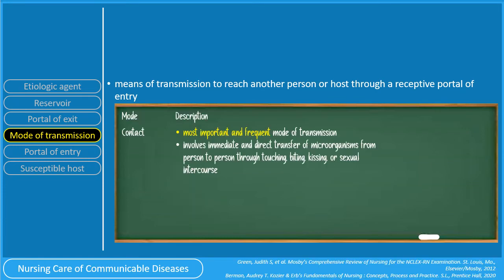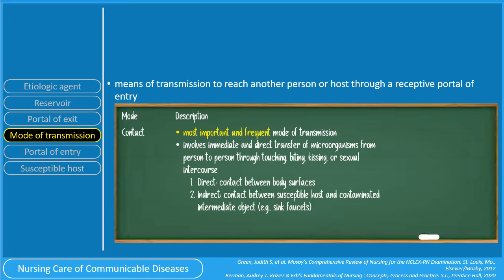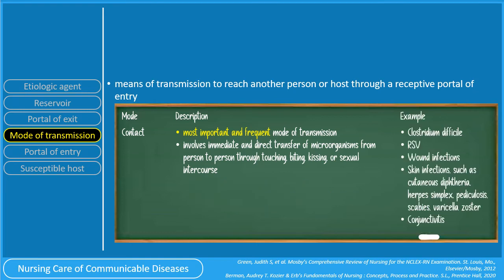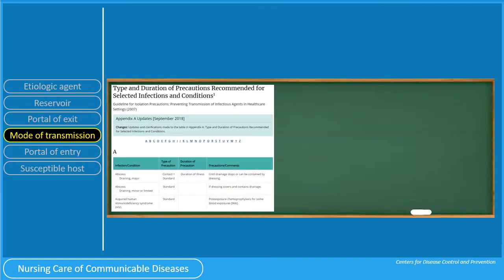Contact transmission is the most important and most frequent mode of transmission. It involves immediate and direct transfer of microorganisms from person to person through touching, biting, kissing, or sexual intercourse. Contact transmission may be direct or indirect. Diseases transmitted via contact include Clostridioides difficile, RSV, wound infections, skin infections such as cutaneous diphtheria, herpes simplex, pediculosis, scabies, varicella zoster, and conjunctivitis. Note that varicella zoster appears under both airborne and contact transmission — certain entities may have one, two, or even three modes of transmission. When in doubt, visit the CDC website to determine the type and duration of precautions recommended.